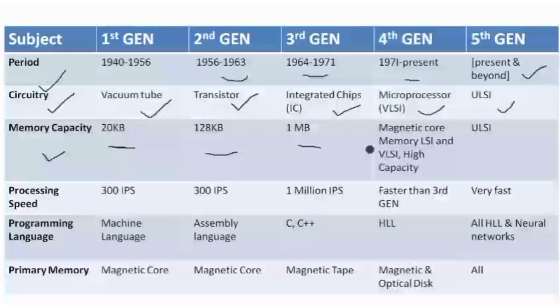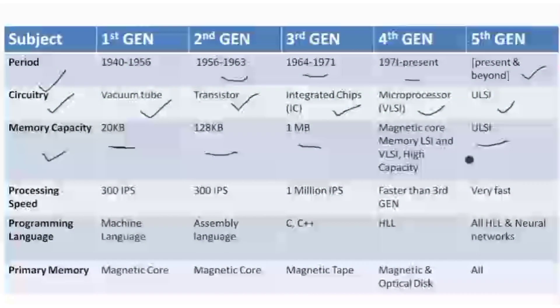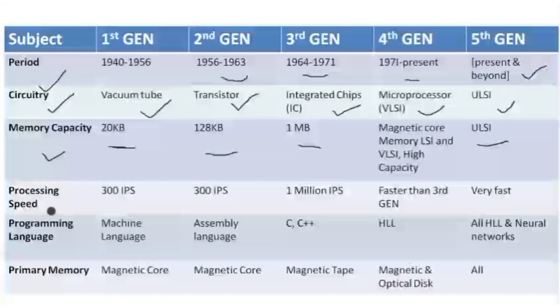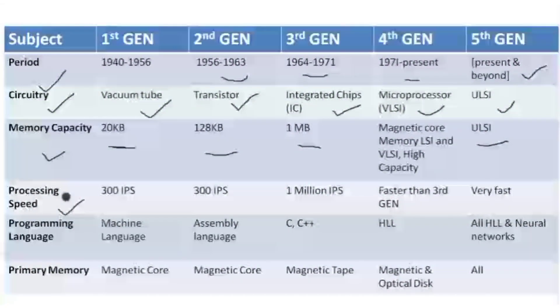In the fourth generation, high-end capacity became available. We started using magnetic cores. In the fifth generation we use ULSI technology, due to which there is no restriction on size.